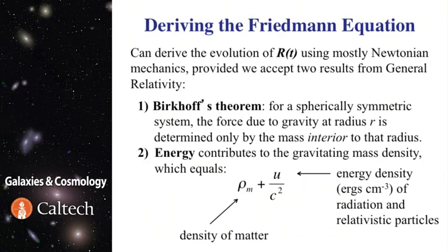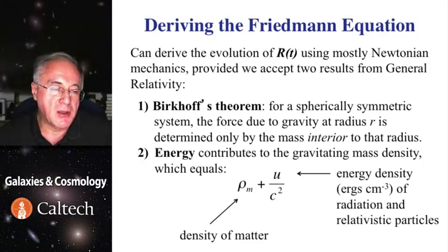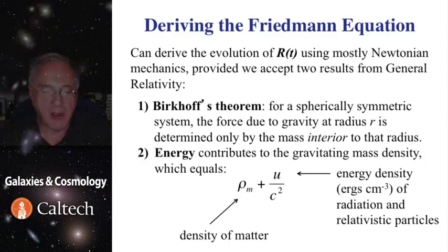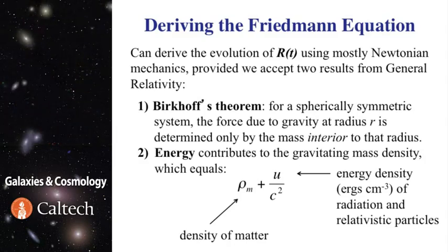First, there is Birkhoff's theorem, which says that for a spherically symmetric system, the force due to gravity at some radius is determined only by the mass interior to that radius. And then also that energy contributes to gravitational mass density, so you really need to add them up together. So total energy or mass density can be expressed as one or the other modulo square of speed of light.